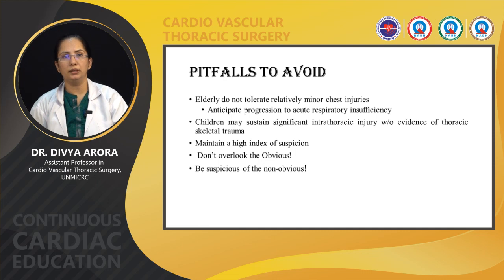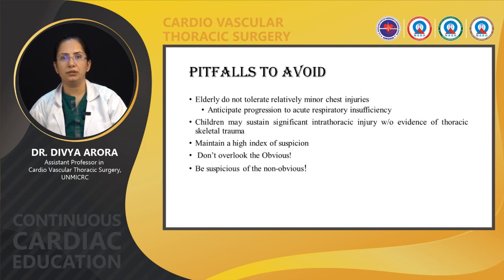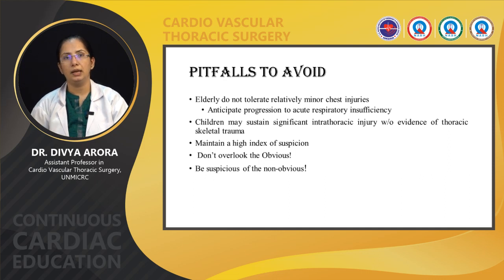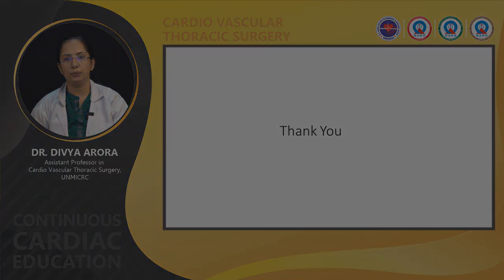Pitfalls to avoid: the elderly do not tolerate relatively minor chest injuries — anticipate progression to acute respiratory insufficiency. Children may sustain significant intrathoracic injury without evidence of thoracic skeletal trauma, so maintain a high index of suspicion. Don't overlook the obvious and be suspicious of the non-obvious. Thank you.